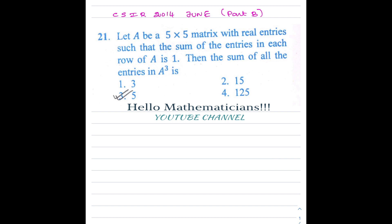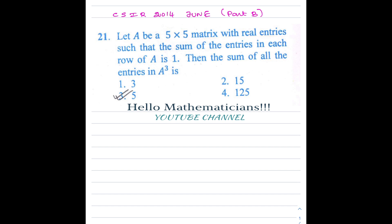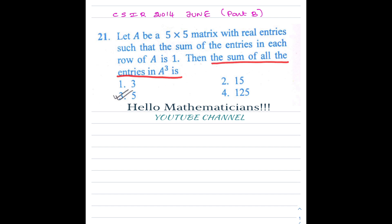Hello Mathematicians! Today we see a nice problem asked in CSIR June 2014. It is a Part B problem. Let A be a 5 by 5 matrix with real entries such that the sum of the entries in each row of A is 1. Then the sum of all the entries in A cubed is what?